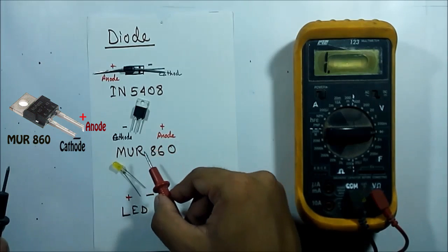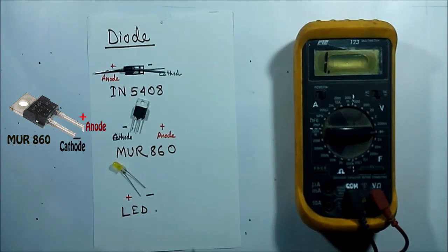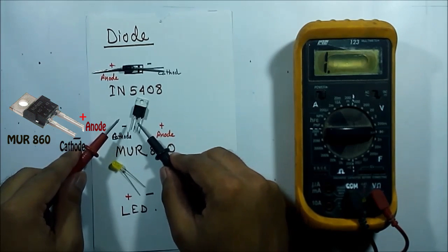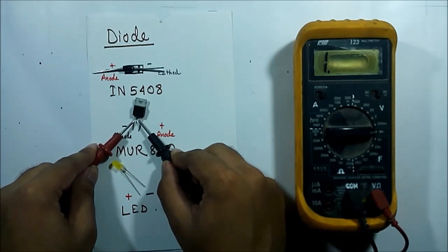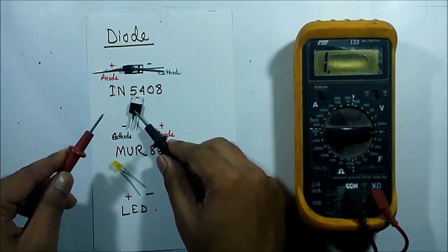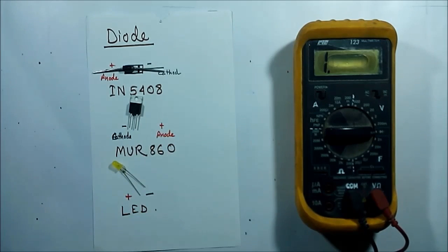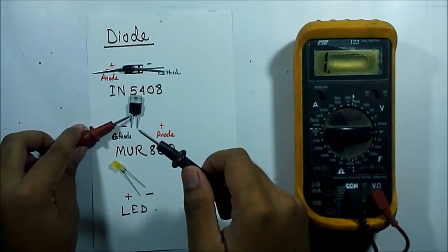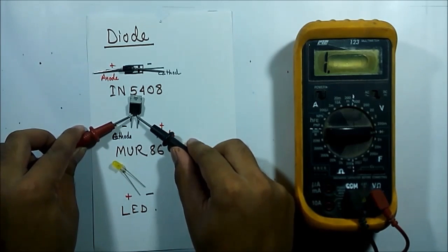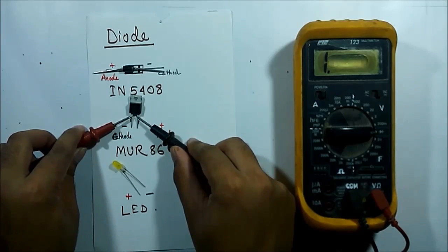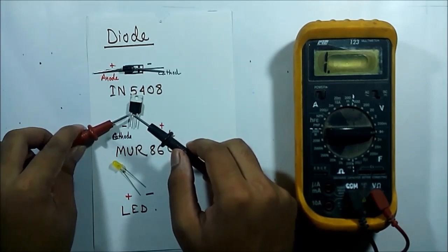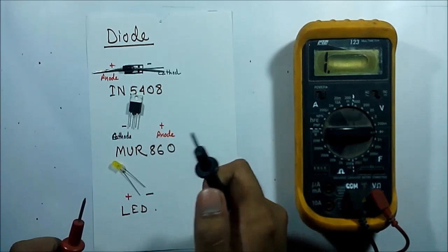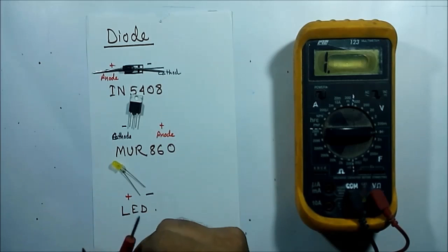If I reverse or alter the leads I get no result, which indicates open circuit, so this diode is okay. If I connect the red lead to the cathode and the black lead to the anode and I am getting a result, then we can say the diode is not okay. We can only get a result by connecting the red lead to the anode and the black lead to the cathode.